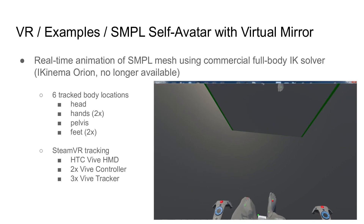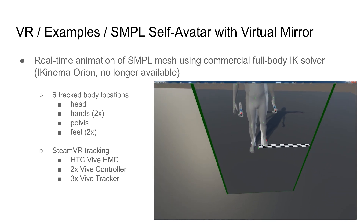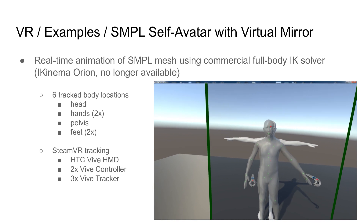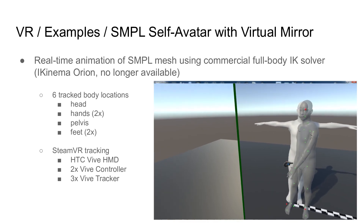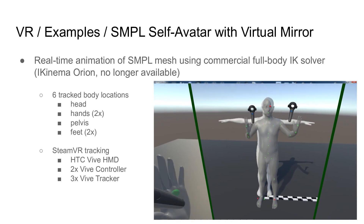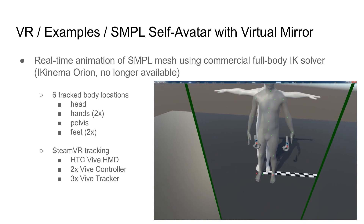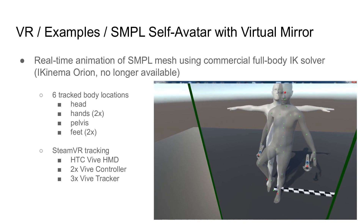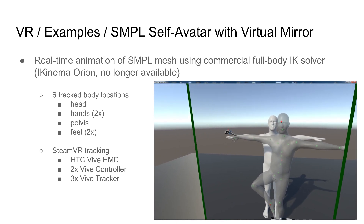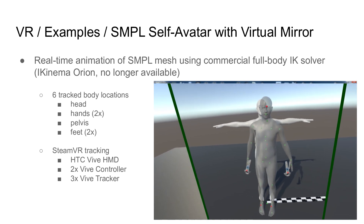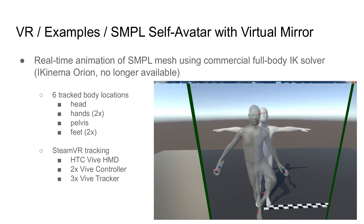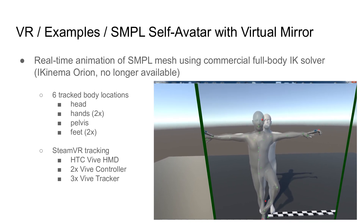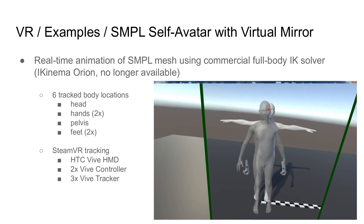In this example, you see how we use the SMPL model to create a real-time animated self-avatar. We're tracking six body locations with a consumer-grade SteamVR tracking system. Head pose is provided by the head-mounted display. The two handheld Vive controllers provide hand poses, and the pelvis and two feet are tracked using the Vive trackers. This data is fed into a commercial full-body IK solver, which generates the resulting body pose in real-time and is applied in Unity on the skeletal rig of the SMPL model.